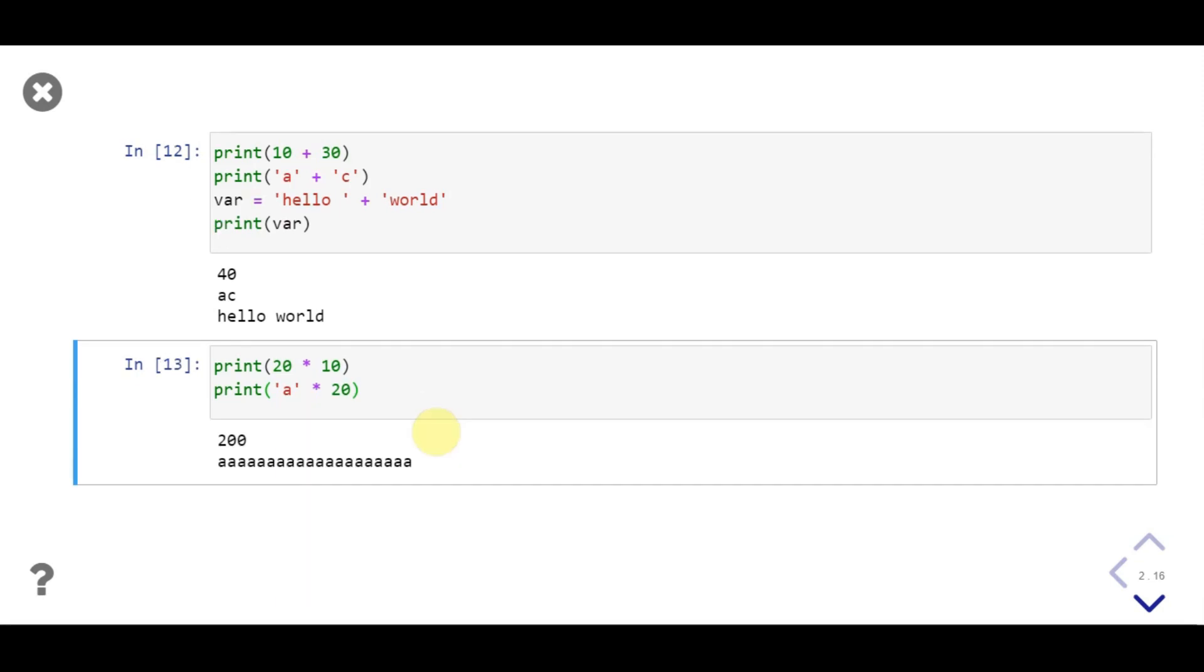But when we multiply any string object with any integer object, it gets copied that integer value number of times. Here we multiplied 'a' with 20, so on printing we get 20 a's as output.